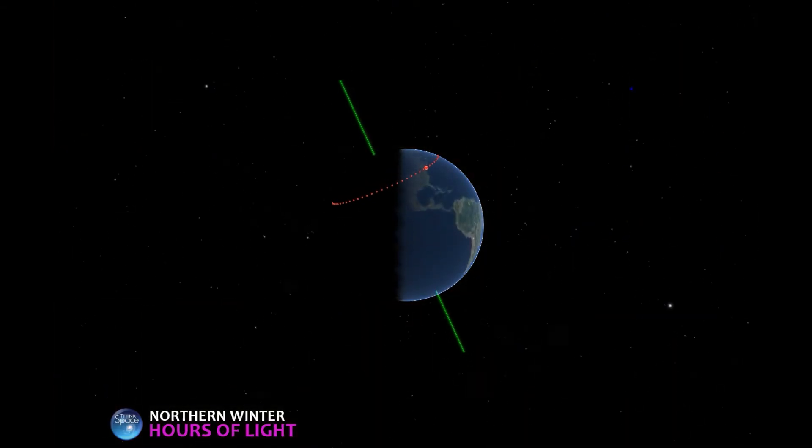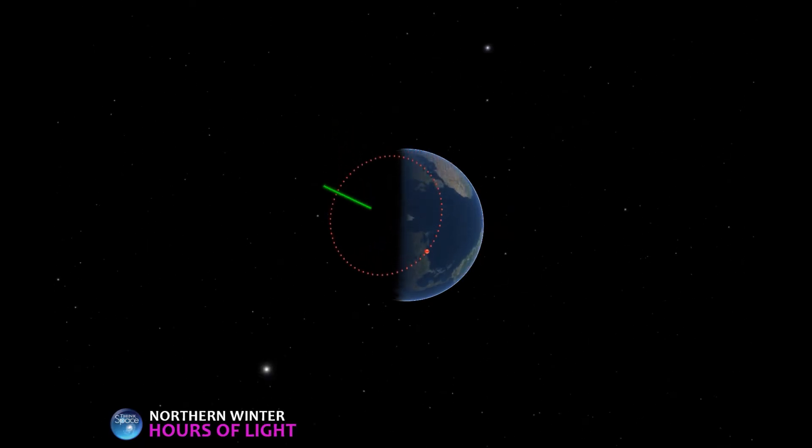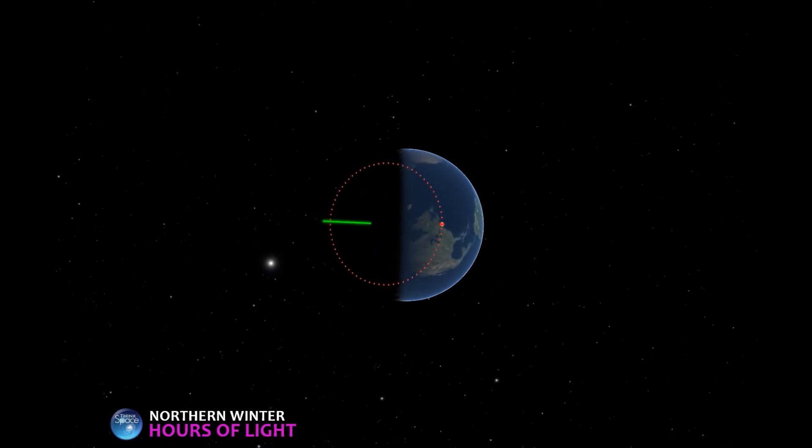And if we look down at the Earth from above again, you'll see that Boston spends much more of its rotation in darkness than in daylight. Just about 15 hours in darkness, and only 9 in daylight.